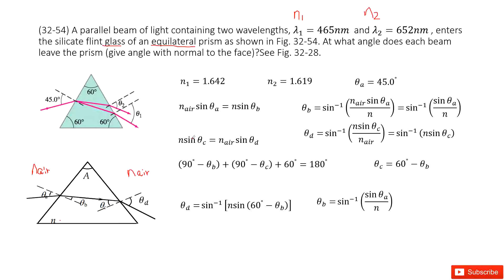And then over there, n sine theta c equals nL sine theta d. And now we can see nL is given, sine theta a is given, n we don't know yet but we can assume we know it because we have two cases, n1 and n2 are given. Sine theta b we don't know.